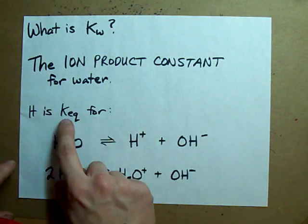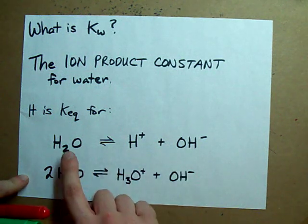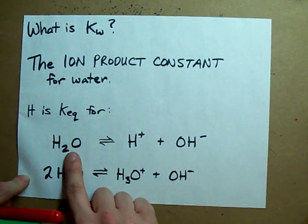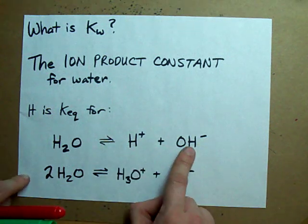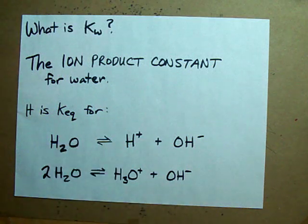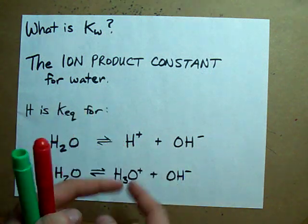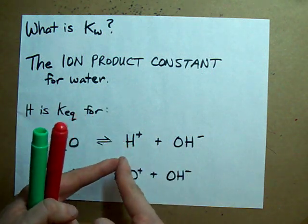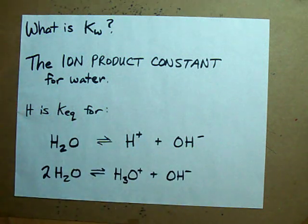It's actually the equilibrium constant for this equilibrium here, where water, liquid water, breaks up into H-plus and OH-minus. It's a reversible process, and a process that's always happening in any solution. Some water breaks into the ions, some ions get back together to form the water, and it's a continuous process happening in equilibrium.